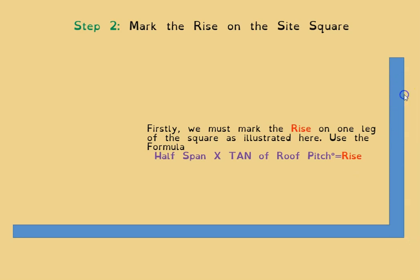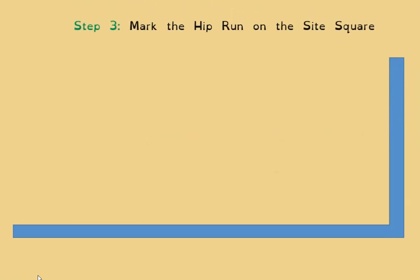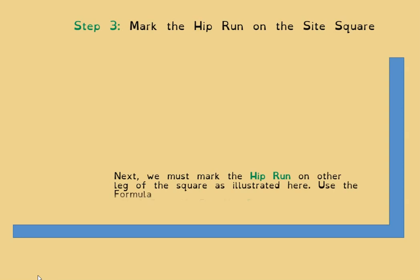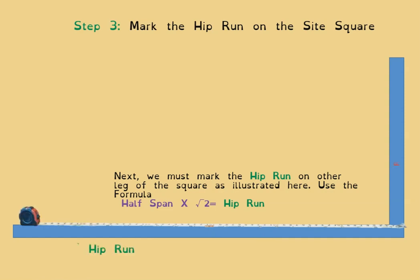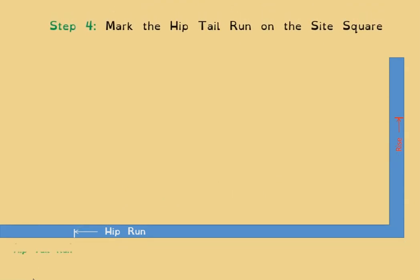The common and the hip share the same rise — they are the same. So you'll be measuring up this leg now with the rise for that roof, as shown here in the animation: hook your tape on there, spring up the measurement, mark it, and that is your rise distance. Next we get the hip run, which goes on the other leg of the square. Using the formula: half span multiplied by the square root of two gives you the hip run — measure out that answer along the leg and mark it.